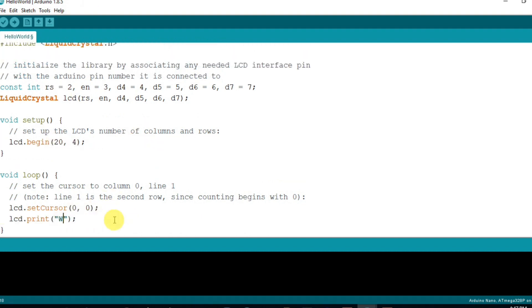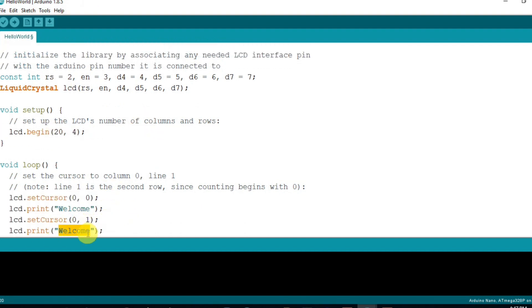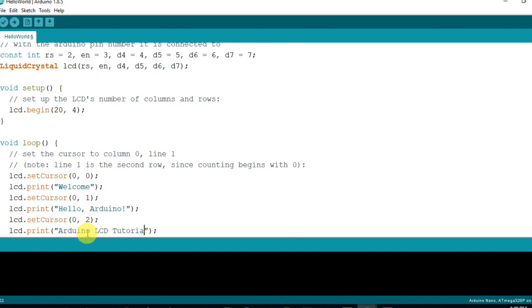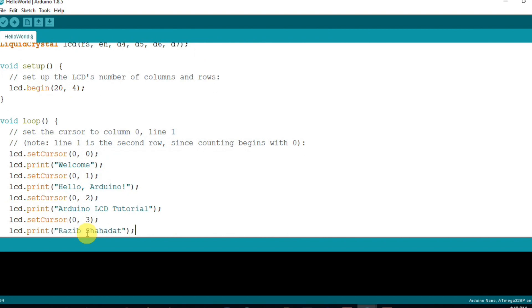Next, in the void loop section, we write the code to print 4 different messages in 4 different lines. After I write the code, now we going to re-upload the code.